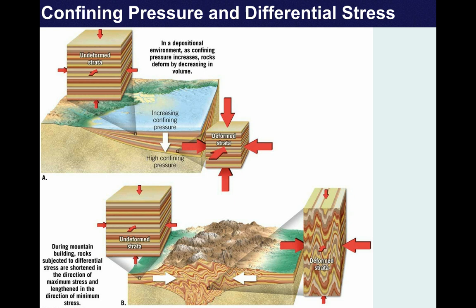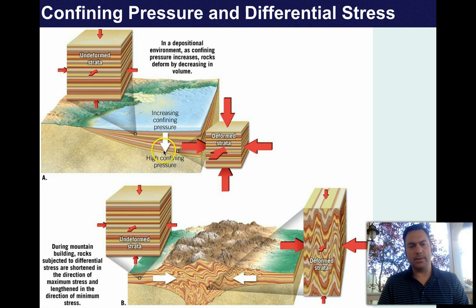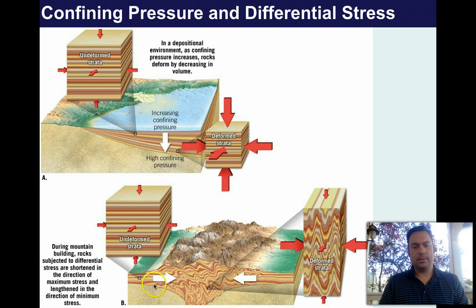Here are these concepts in a diagram. Undeformed strata has pressure coming in all directions. With high confining pressure, the same rocks take up less space — they're compacted. During mountain building, rocks subject to differential stress are shortened in the direction of maximum stress, so an undeformed set of rocks gets compressed and looks like the deformed version with the major compression arrow in one direction.